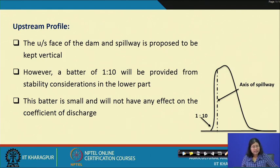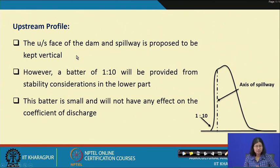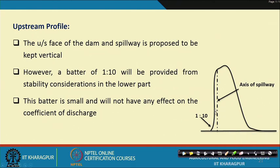Designing the upstream profile: the upstream face of the dam and spillway is proposed to be kept vertical. However, a batter of 1:10 will be provided from stability point of view in the lower part. This batter is small and will not have any effect on the coefficient of discharge. So the axis of the spillway is kept vertical, with the 1:10 batter clearance provided for stability.